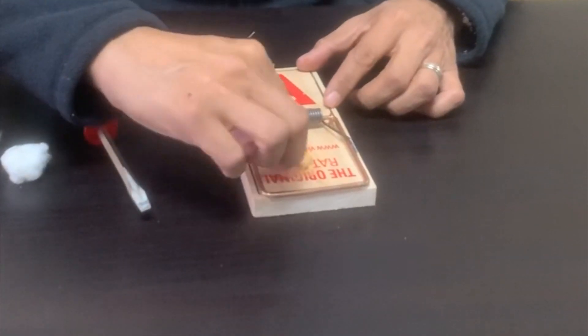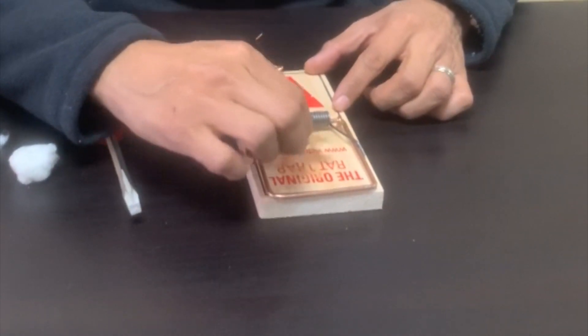When the rodent comes to eat the bait, they will tug against the cotton to ensure they trigger the trap.